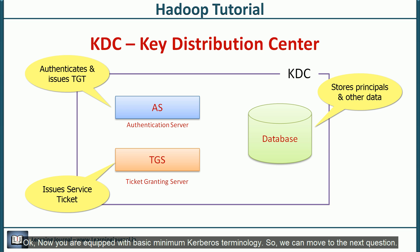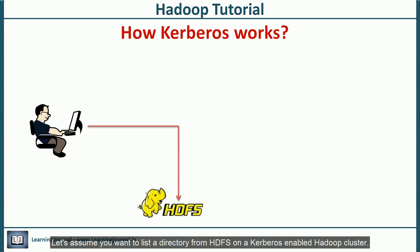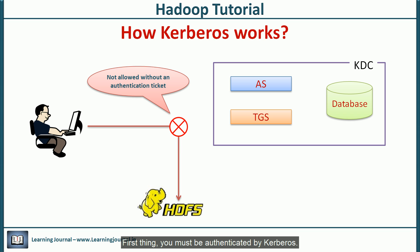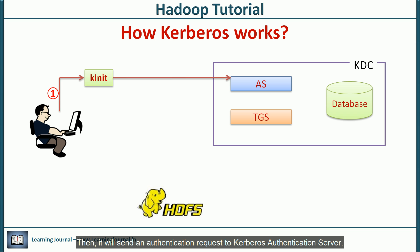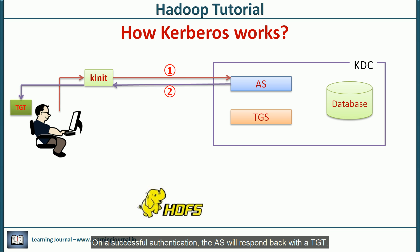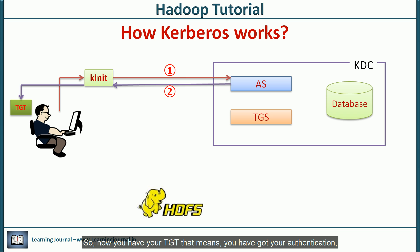Now you are equipped with basic Kerberos terminology, so we can move to the next question. Let's assume you want to list a directory from HDFS on a Kerberos-enabled Hadoop cluster. First, you must be authenticated by Kerberos. On a Linux machine, you can do it by executing the kinit tool. The kinit program will ask you for the password, then it will send an authentication request to the Kerberos authentication server. On a successful authentication, the AS will respond back with a TGT. The kinit tool will store the TGT in your credentials cache. So now you have your TGT — that means you have got your authentication and you are ready to execute a Hadoop command.